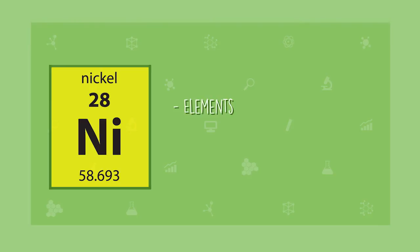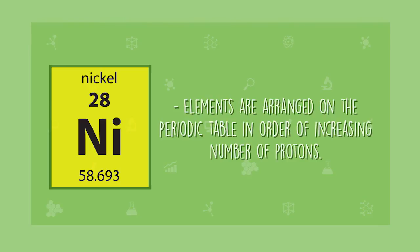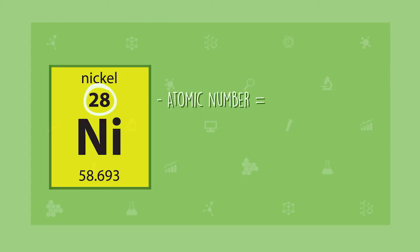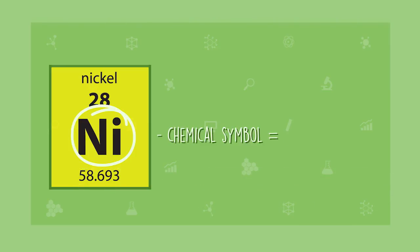So that is how you interpret the letters and numbers on the periodic table. To recap: elements are arranged on the periodic table in order of increasing number of protons. The number of protons in an element is its atomic number. The mass number corresponds to the mass of the protons plus the neutrons typically found in an element. And the chemical symbol for each element is a universal symbol which contains one or two letters and is sometimes derived from the Latin or Greek names for that element.